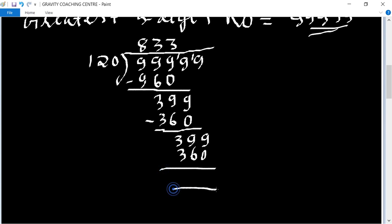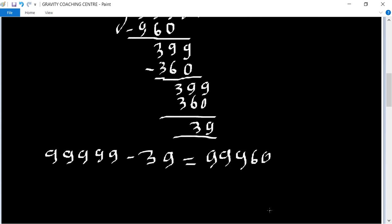Now again, remainder is 39. Bring down 9, so table of 3 times 120 equal to 360. So our remainder is 39. So 99999 minus 39 equal to 99960.